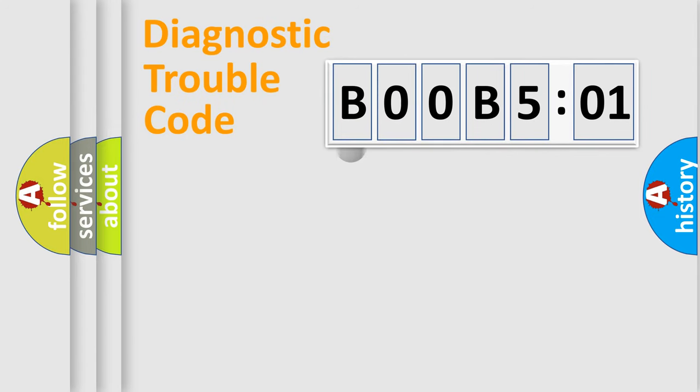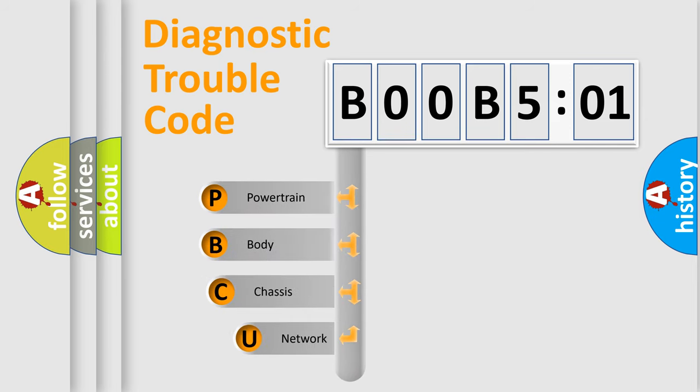First, let's look at the history of diagnostic fault code composition according to the OBD2 protocol, which is unified for all automakers since 2000. We divide the electric system of automobile into the four basic units.